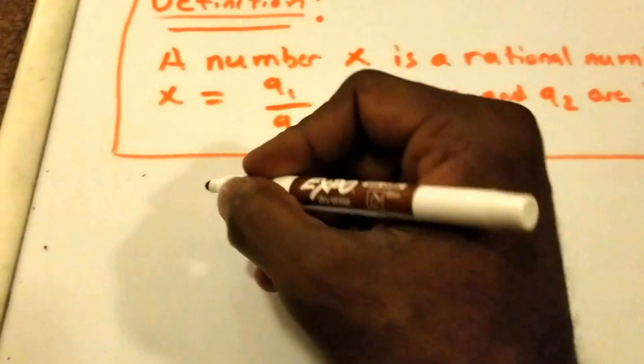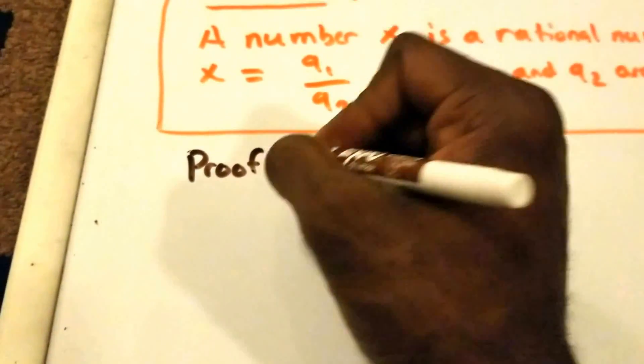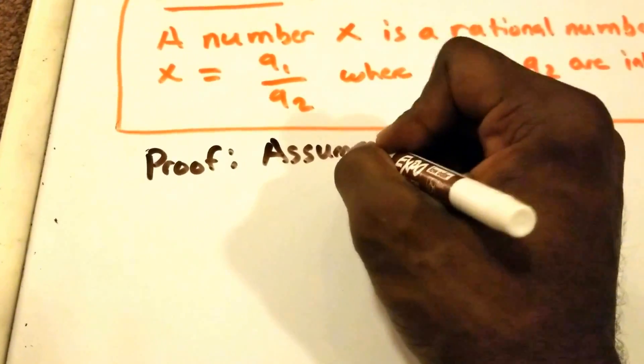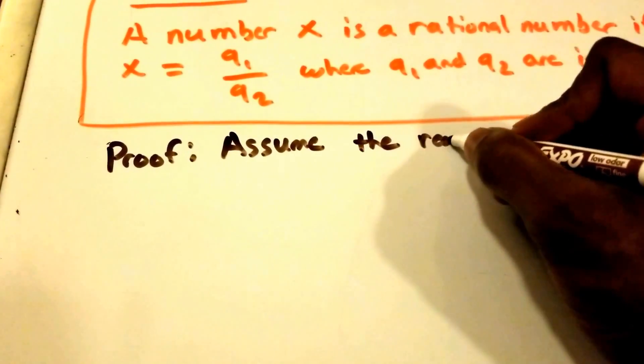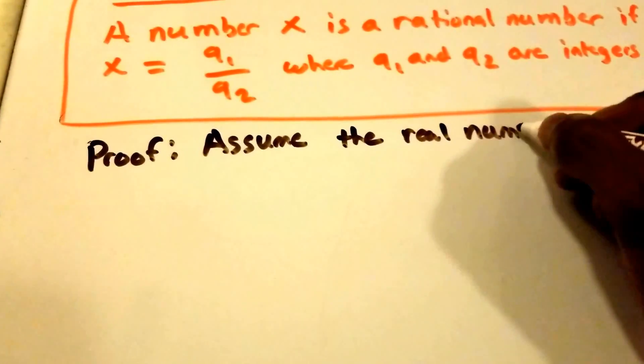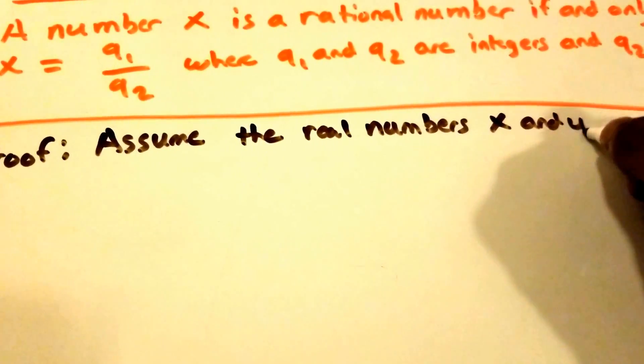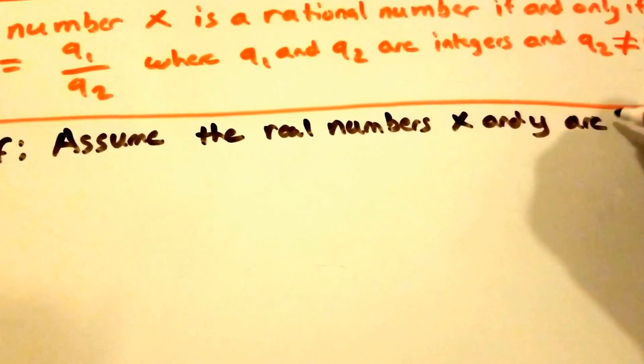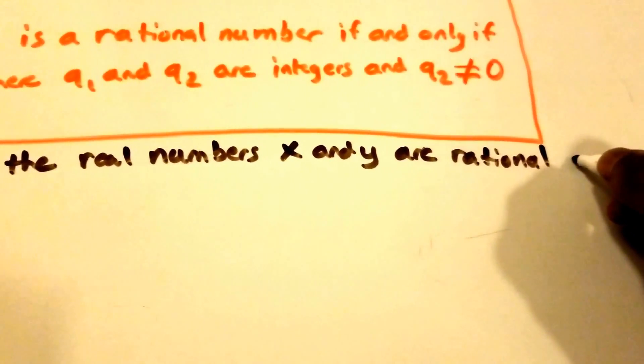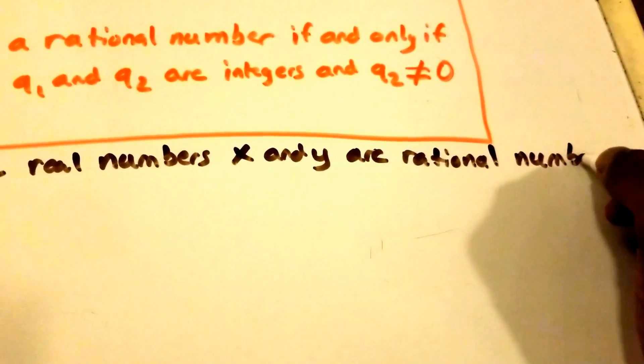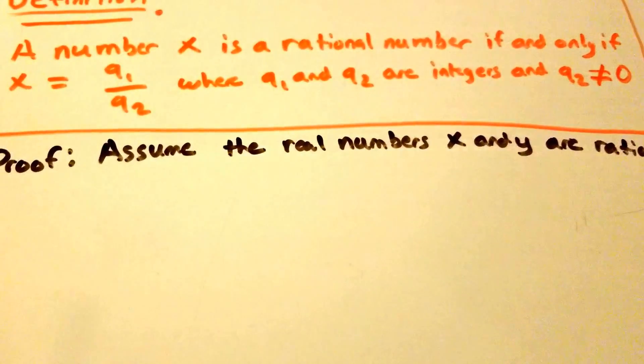So let's go ahead and get started. We're starting that proof and what we're going to do here is we're going to assume that the real numbers that we're going to call x and y are rational numbers. And so now we want to show that this is true.